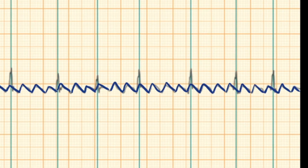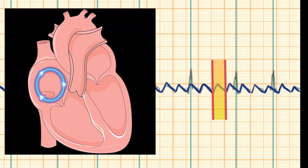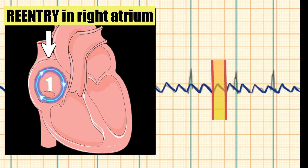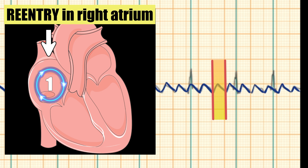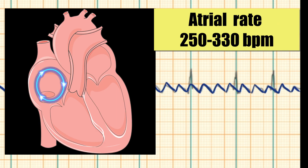Atrial flutter is a macro reentrant atrial tachycardia. Every sawtooth wave indicates one reentry circle inside the right atrium. Atrial activation rate in the case of atrial flutter ranges from 250 to 330 beats per minute. Let's calculate the rate of sawtooth waves in our case.